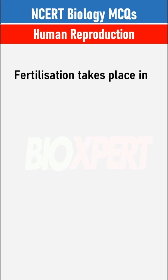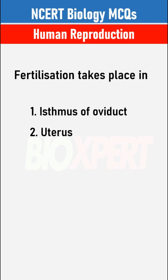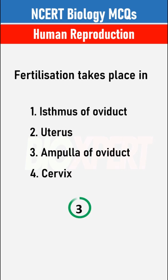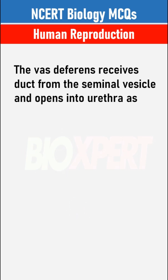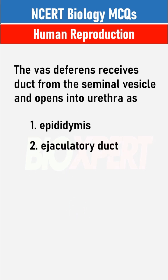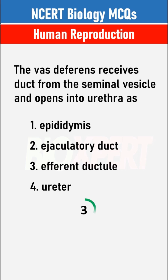Fertilization takes place in the ampulla of the oviduct. The vas deferens receives duct from the seminal vesicle and opens into the urethra as ejaculatory duct.